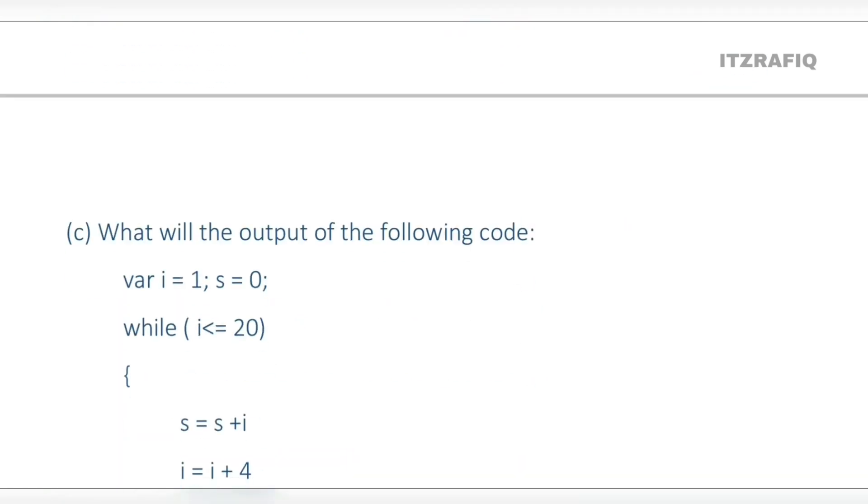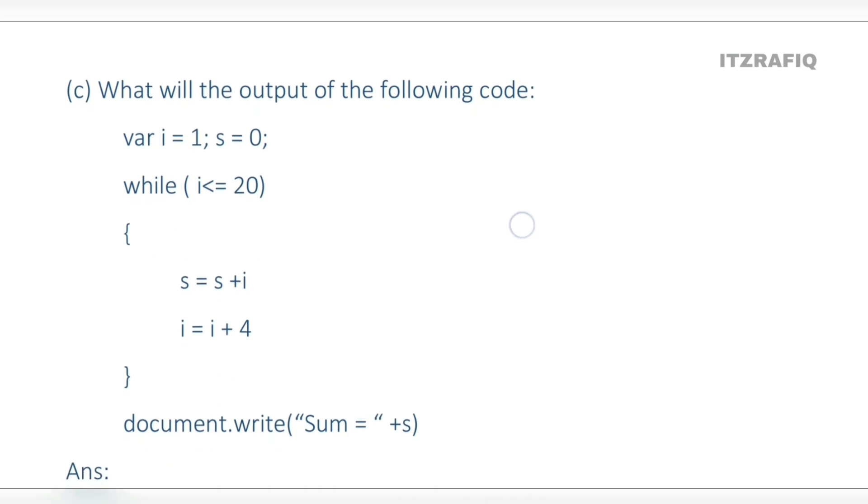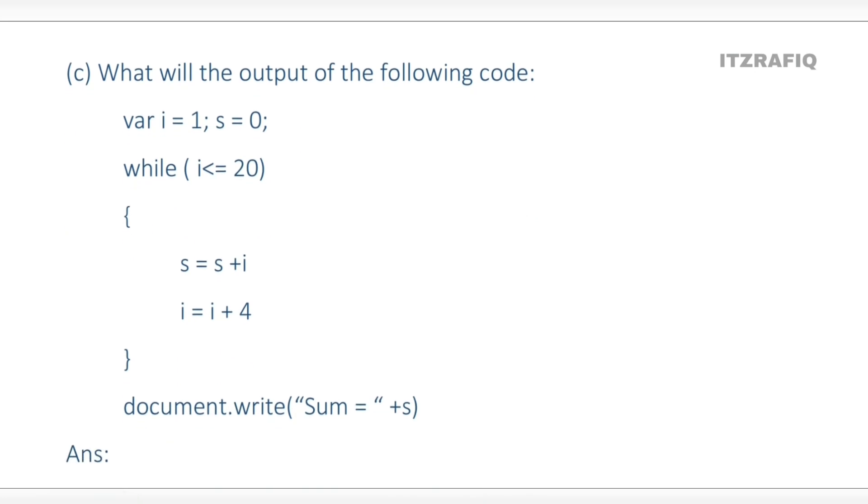Now we are coming to question number seven, part C: what will the output of the following code be? var i equals 1, s equals 0, while i is less than or equal to 20. s equals s plus i, meaning each time s accumulates the current value of i.